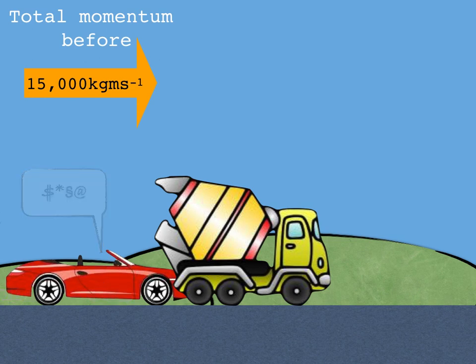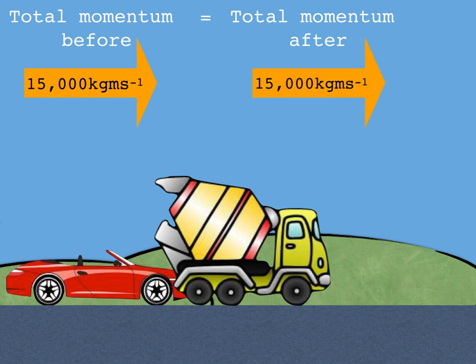Now before that crash the total momentum was 15,000 kgm/s to the right, which means afterwards the total momentum will still have to be 15,000 kgm/s to the right. And that's going to be true in every single collision question you ever get asked. Total momentum before equals total momentum afterwards.